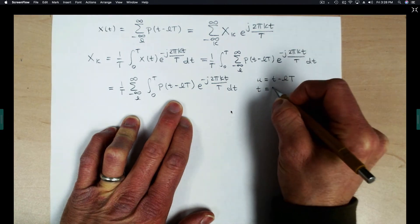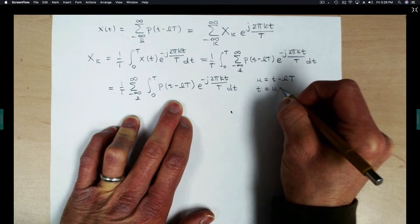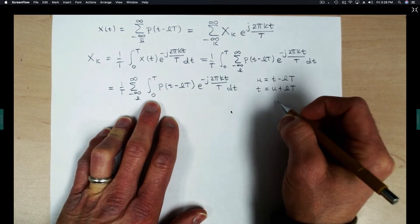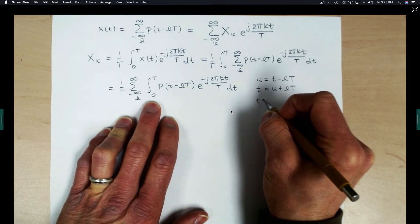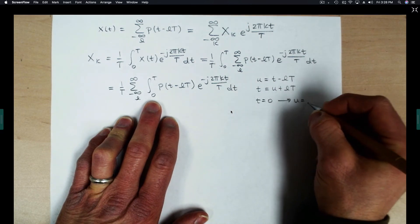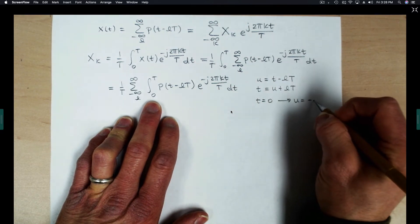We can rearrange this to get T is equal to U plus LT. And then if we look at the limits, when T is equal to 0, U will be equal to minus LT.